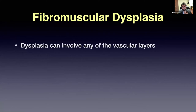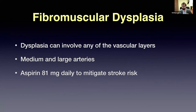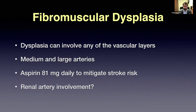Fibromuscular dysplasia can also involve the renal arteries. In this patient it did, and on renal artery angiogram you can see the beaded appearance. If we do renal artery angioplasty, it cures their hypertension, which then cures their pulsatile tinnitus. So if you see fibromuscular dysplasia causing pulsatile tinnitus and the patient has hypertension, think about the renal arteries — because that's quite safe. We treat patients with 81 mg of aspirin to mitigate stroke risk, and then ask whether the renal arteries are involved, because that can cure the patients.